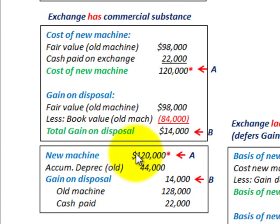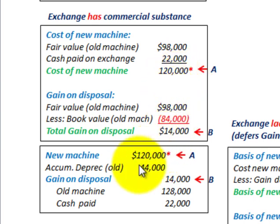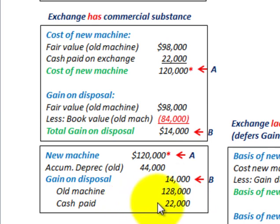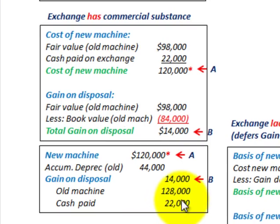To record this entry where the exchange has commercial substance: we debit the new machine for $120,000 (the cost of the new machine). We remove the accumulated depreciation of the old machine — $44,000. We recognize the gain on disposal of $14,000. We remove the old machine's cost of $128,000 off the books. And we credit or reduce our cash account by $22,000 for the cash paid on the exchange.